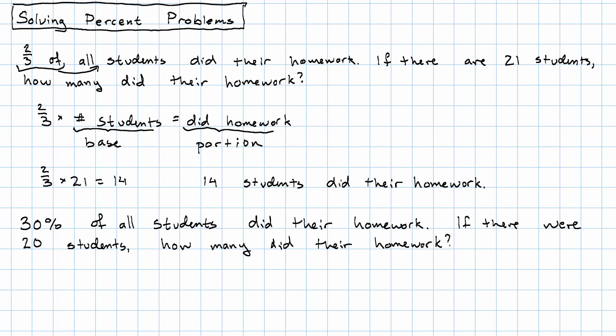We could instead say that 30% of all students did their homework. Obviously, that's a different fraction than two-thirds. This is a different problem. If there were 20 students, how many did their homework?